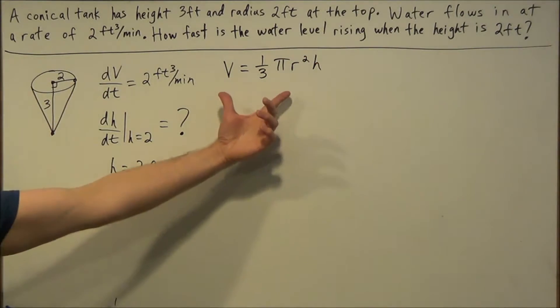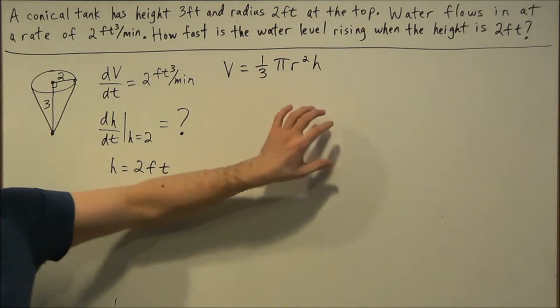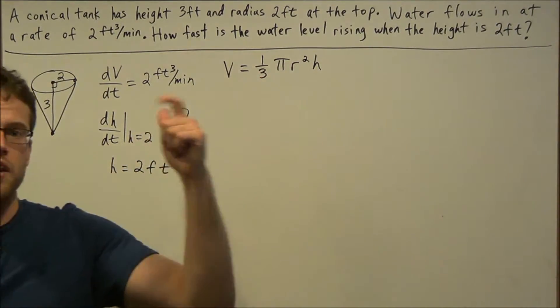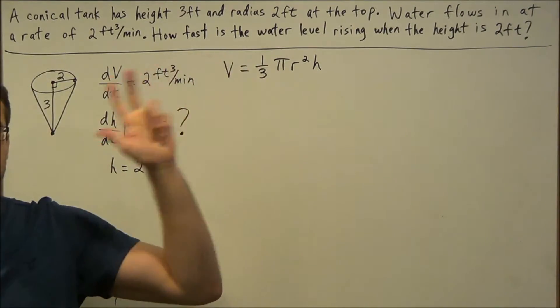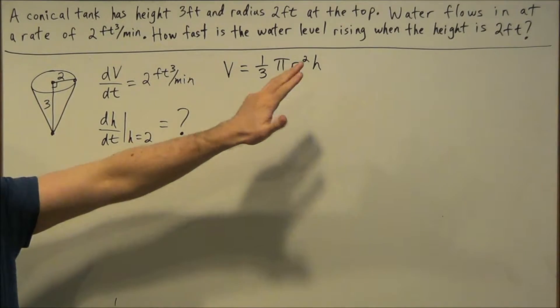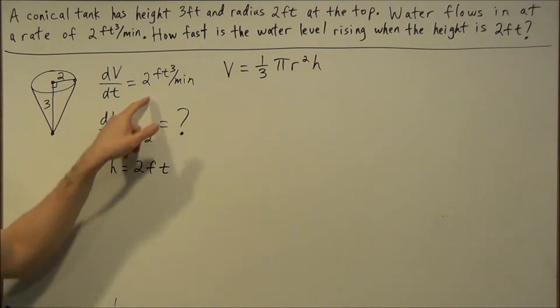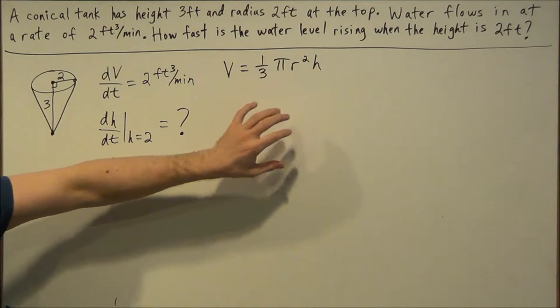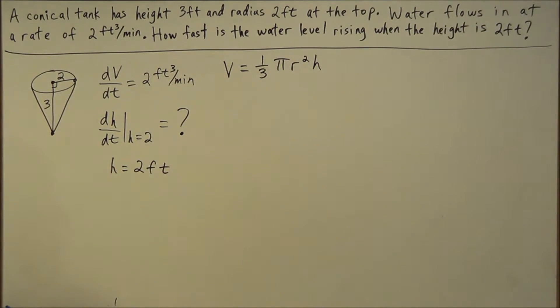But the problem with just using this equation is if we take the derivative of both sides, on the right side we're going to have an r term, an h term, a dr/dt term, and a dh/dt term. So that's four unknowns on the right-hand side, and right now we only know two pieces of information. So we need to introduce a second equation to fix this problem that we have too many unknowns.